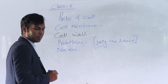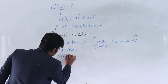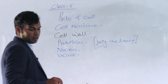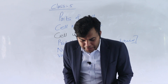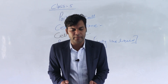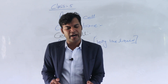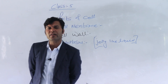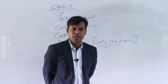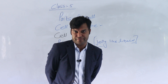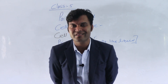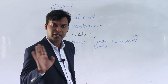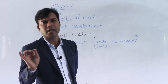Next one is the vacuole. What is a vacuole? This is a part filled with fluid. It is big and easily seen in a plant cell — it occupies a large part of the plant cell. The vacuole is large in size in a plant cell, but small in size in an animal cell. Vacuole is found in both plants and animals.